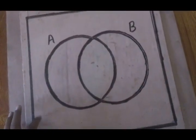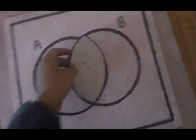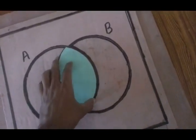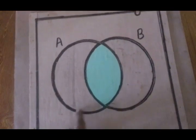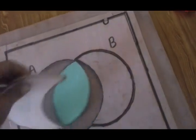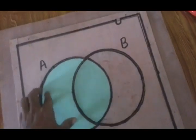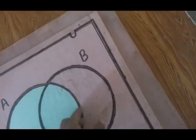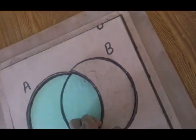This is actually we know that Venn diagram. This is what I am going to show. What is this? A to B.